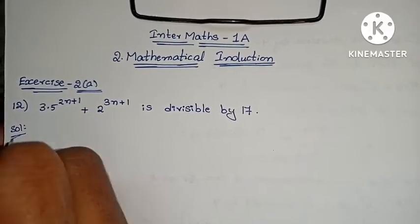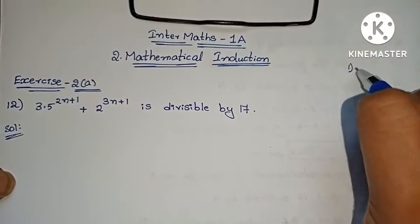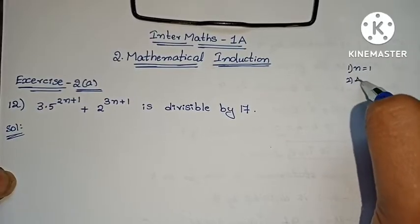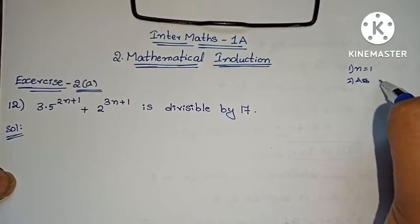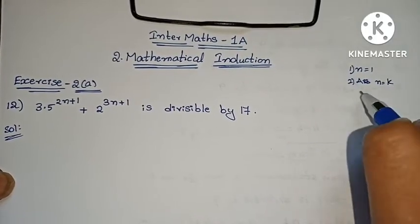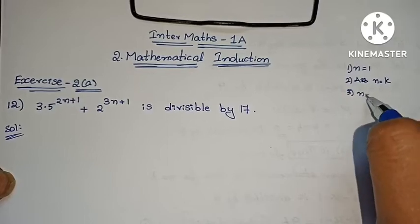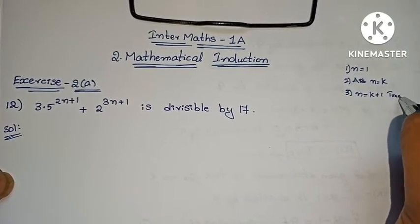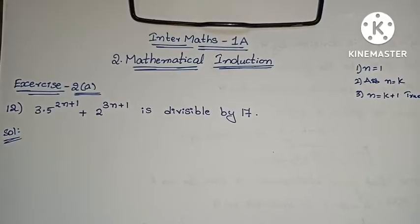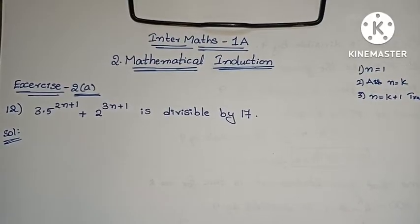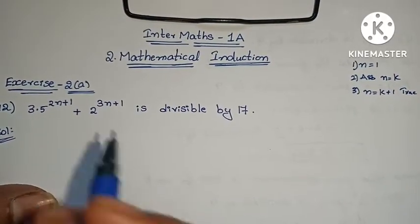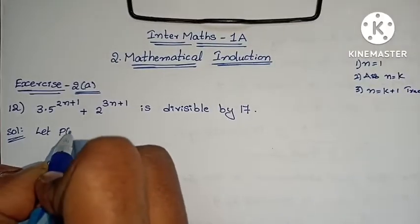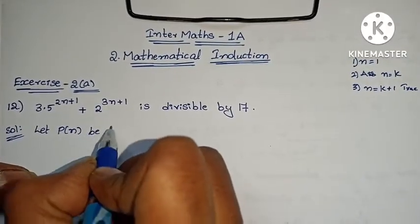The process is the same. First step: it is true for n equals to 1. Second step: assume that it is true for n equals to k. Third step: for n equals to k plus 1, the statement is true — we have to prove. We follow these 3 steps for every problem. Let P of n be the given statement.